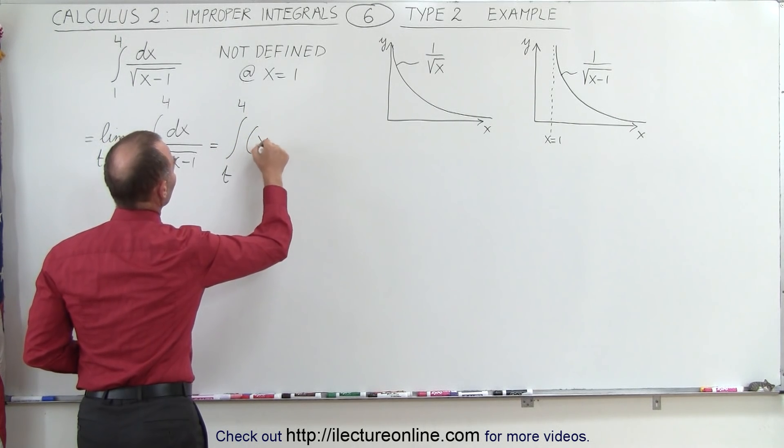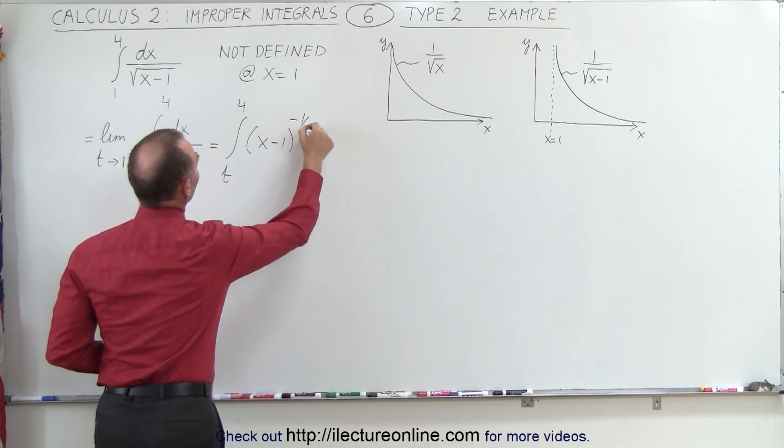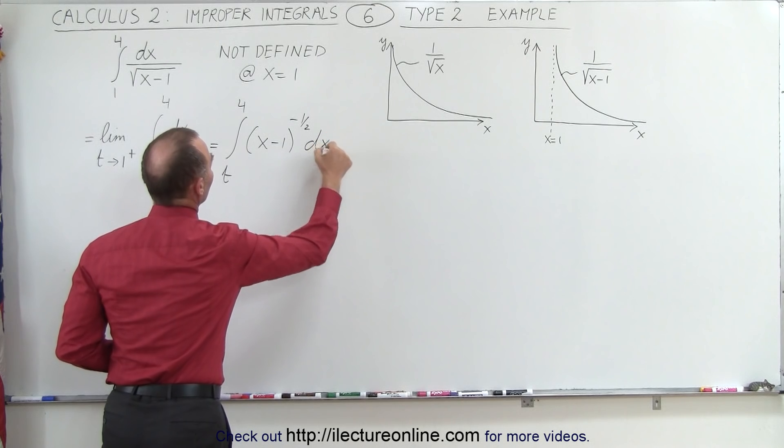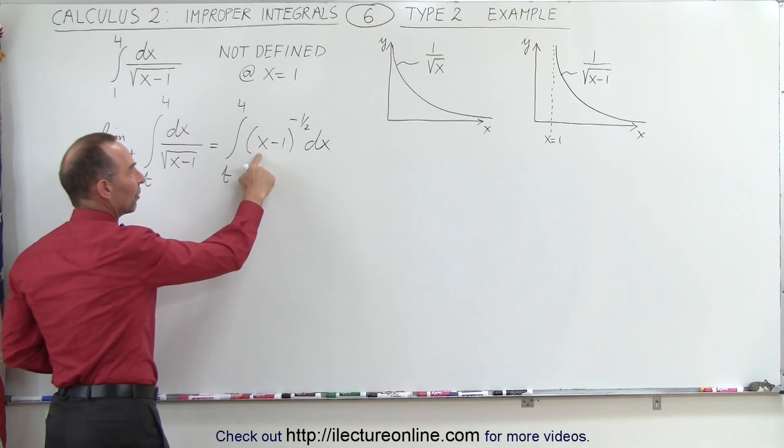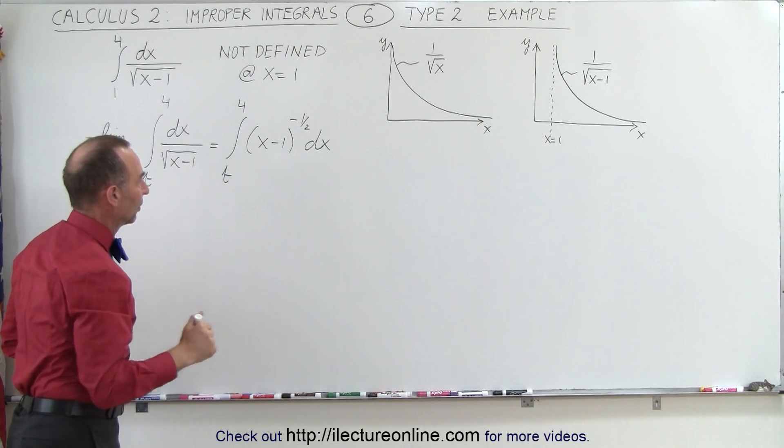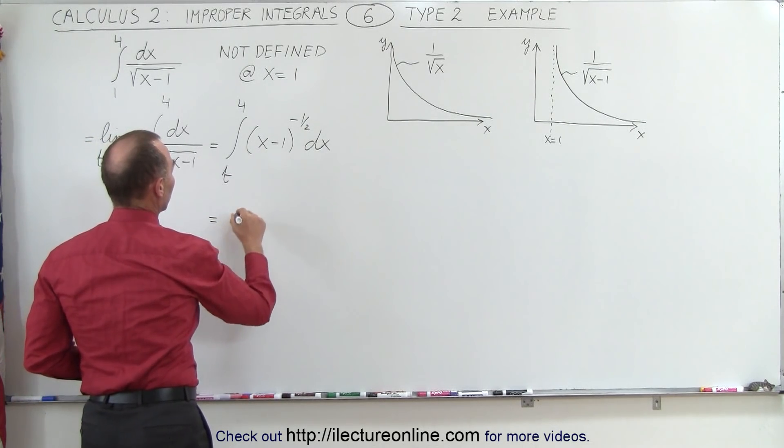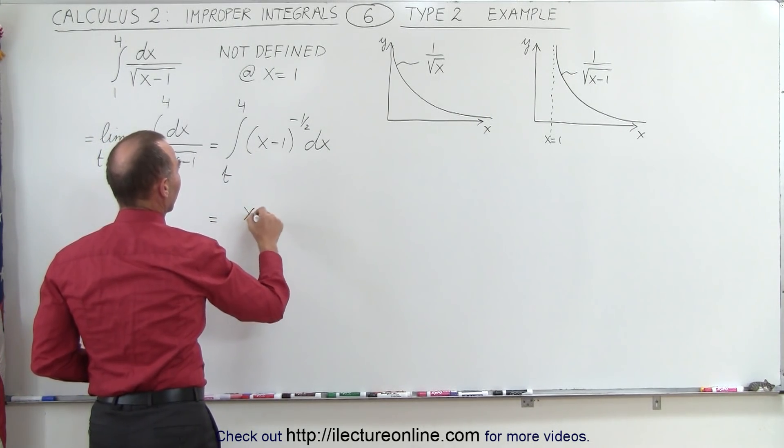And this we can easily integrate because the differential of what's inside the parentheses is indeed dx. So this becomes equal to, now we have x minus 1, we add 1 to the exponent, becomes positive 1 half,